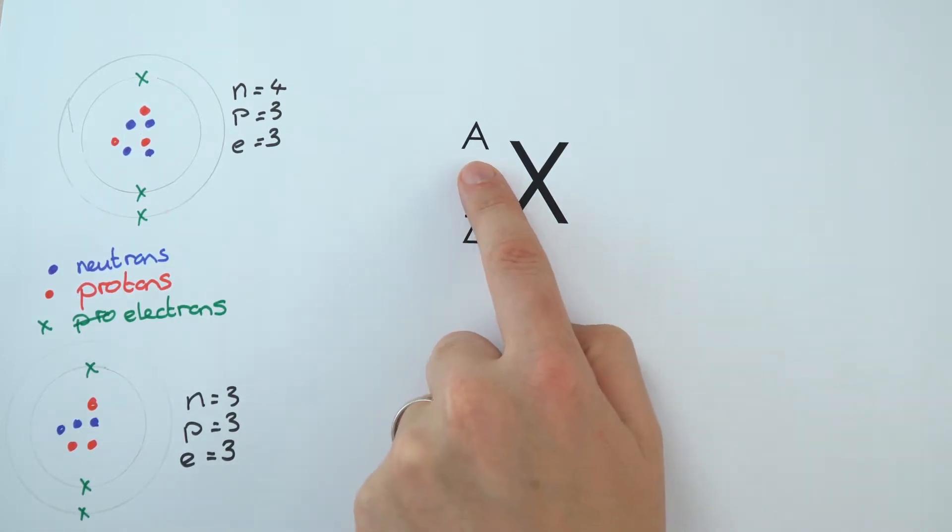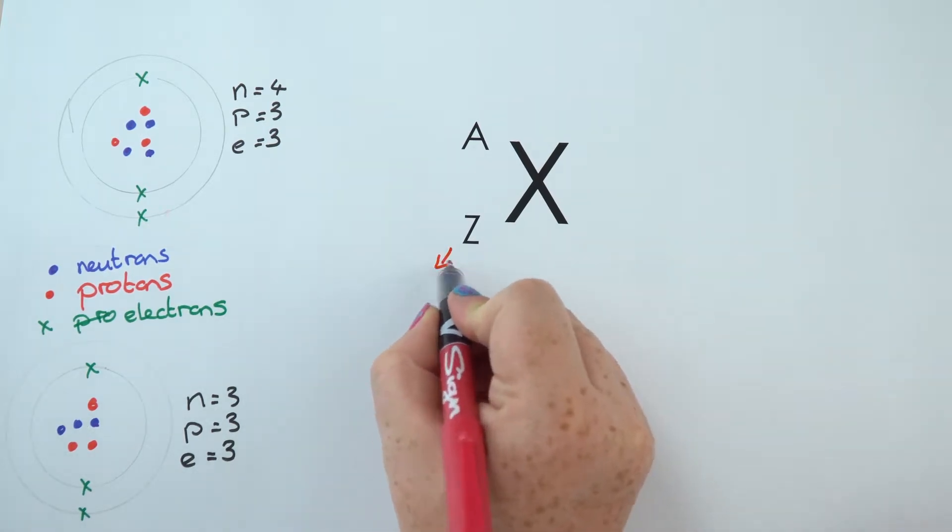Now the other number, which is often the larger number, is given at the top and this is the total number of protons and neutrons in the nucleus of that element.